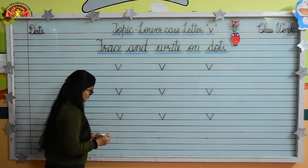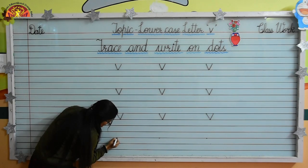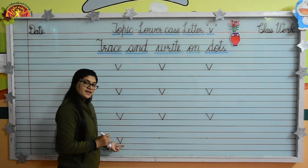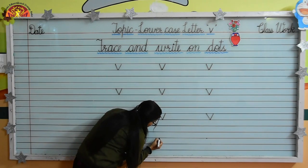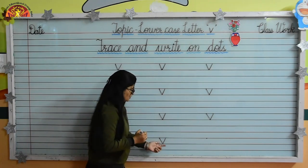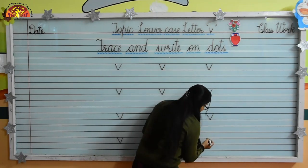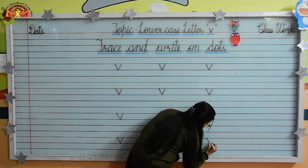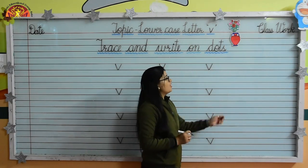So kids, like this you have to do. Write it again — put your pencil here on dot and draw a slanting line very slowly. Now from this point again we will draw one more slanting line. Lowercase letter V. Write it again: put your pencil here on dot, draw a slanting line, and from this point again we will draw a slanting line like this. Lowercase letter V. Now let's write one last time: put your pencil here on dot, draw a slanting line, and from this point one more slanting line. Lowercase letter V. V for vase.